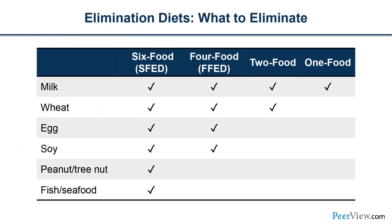Let's talk about elimination diets. The common diets used are the six-food elimination diet — milk, egg, wheat, soy, peanuts, tree nuts, fish, and shellfish — the four-food elimination diet currently used more often, including milk, wheat, egg, and soy; the two-food diet of milk and wheat; or the one-food diet of milk alone. Some patients say they don't want to eliminate six foods but want to see if milk, one of the most common triggers, is the cause, and may decide on a milk elimination diet.